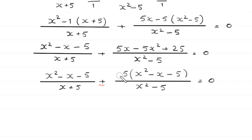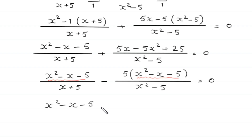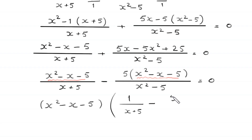So we make this plus negative. Now here we have x squared minus x minus 5, and here we also have x squared minus x minus 5. So we factor out x squared minus x minus 5 as a common factor, and in the bracket we are left with 1 divided by x plus 5 minus 5 divided by x squared minus 5, equal to 0.